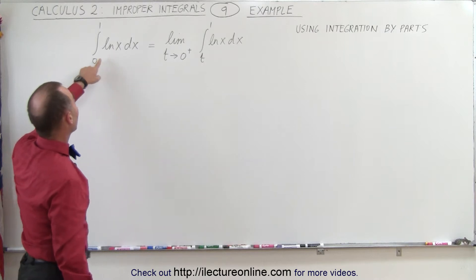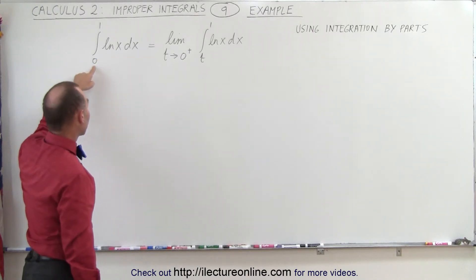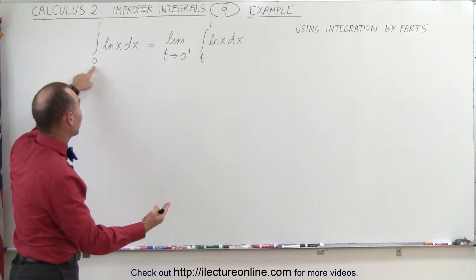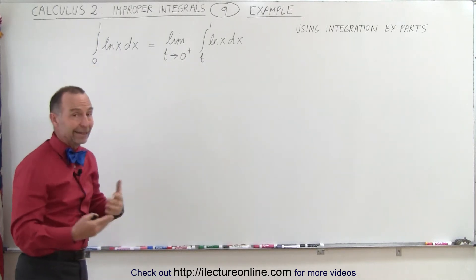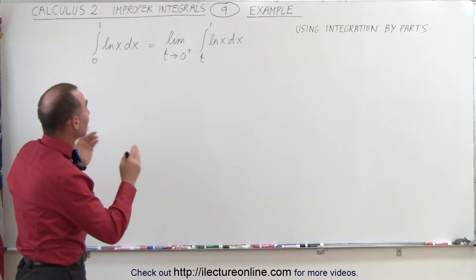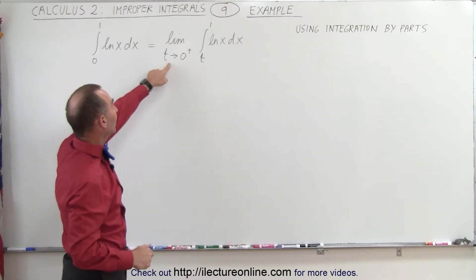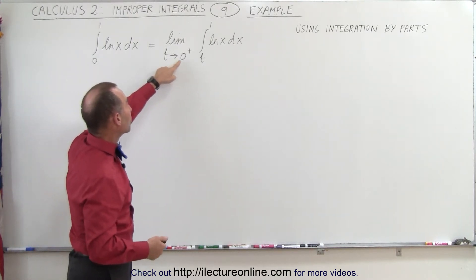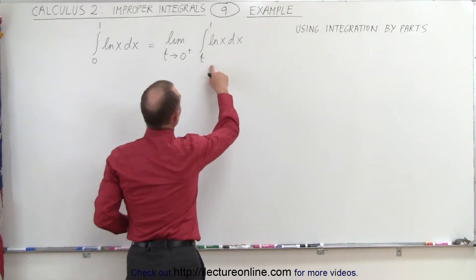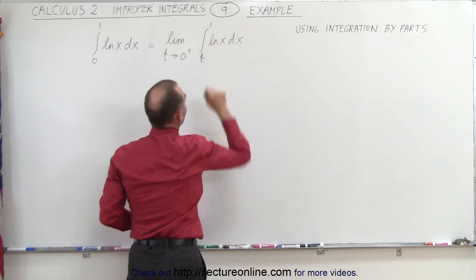First of all, we don't have the natural log of x defined when x is equal to 0. So at the lower limit, the function is not defined — the natural log of 0 is simply not defined. So therefore, we need to be careful. We need to rewrite it as the limit as t approaches 0 from above of the integral evaluated from t to 1 of the natural log of x dx.